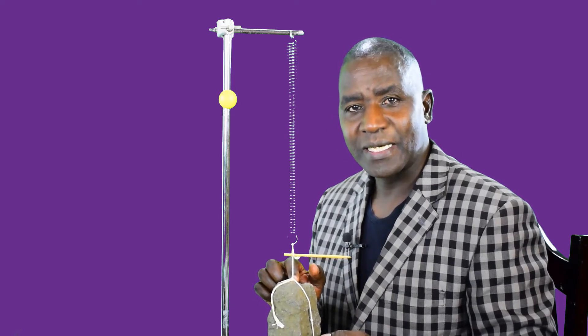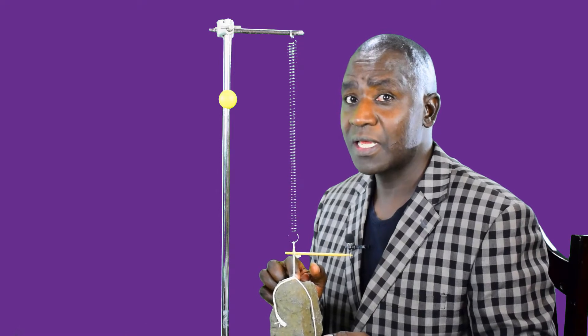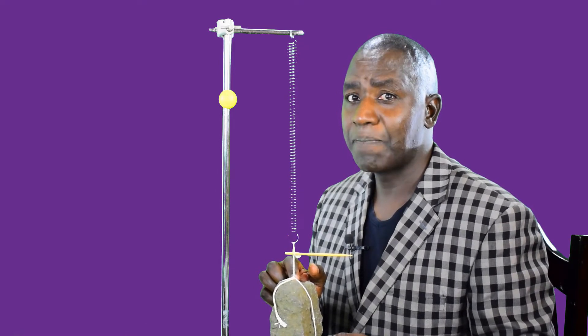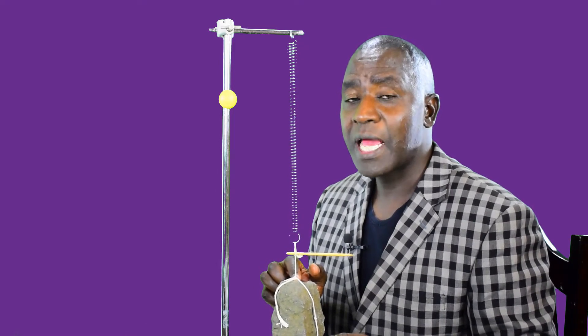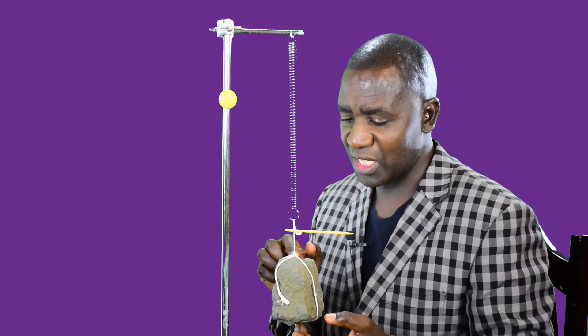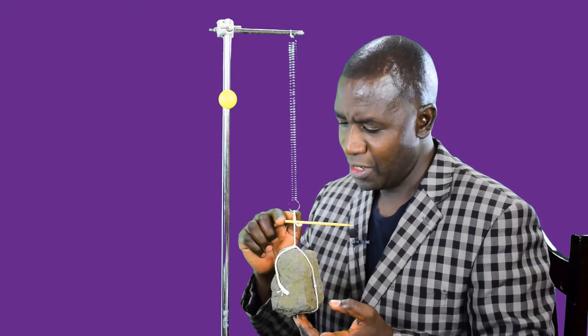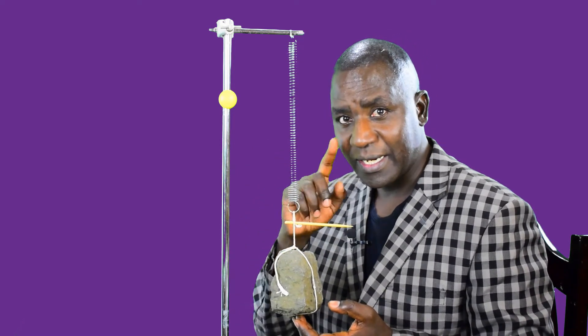moves an equal distance downwards of 10 cm. So the total distance becomes 30 cm, the displacement becomes minus 10 cm, because we said from there, upwards, positive displacement. From there, downwards, negative displacement.